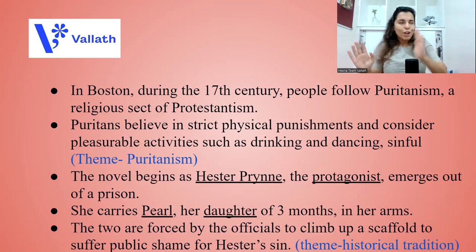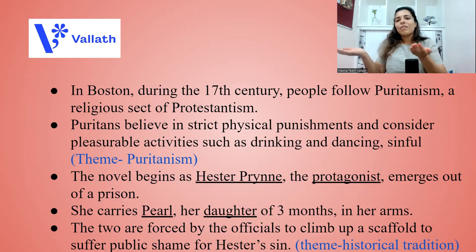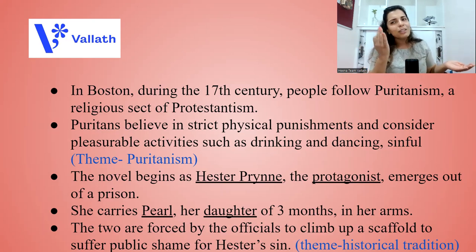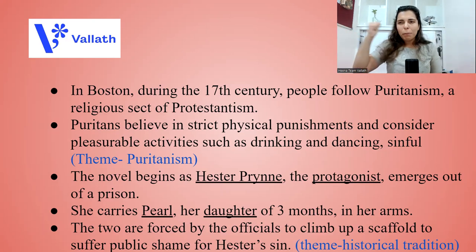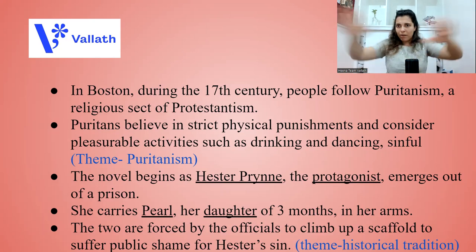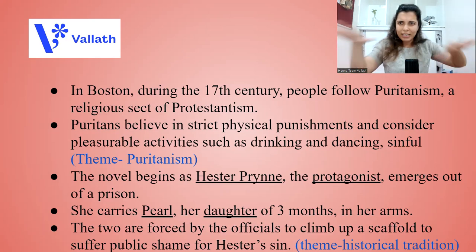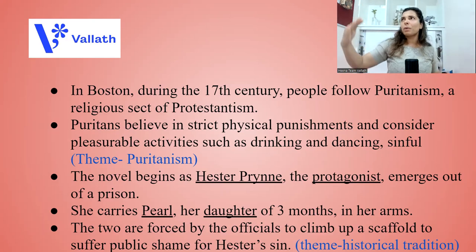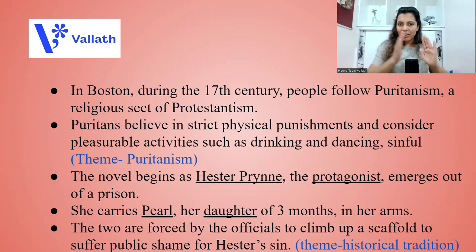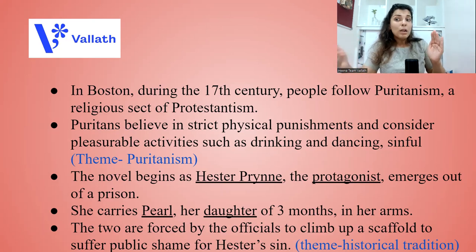Her name is Hester Prynne — note how Prynne rhymes with sin; there is a connection. Hester Prynne is carrying a baby in her arms. This baby is her daughter, Pearl, only three months old. The two are forced by religious officials to climb up a scaffold — a raised wooden platform — to suffer public shame for Hester's sin. The theme of historical punishment is discussed here.